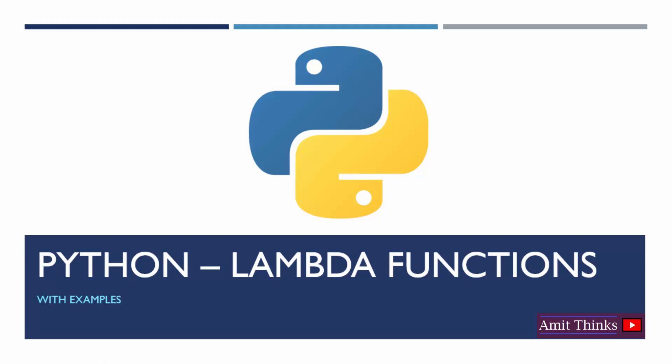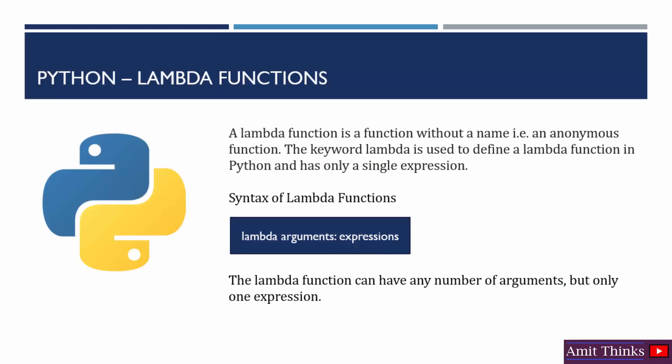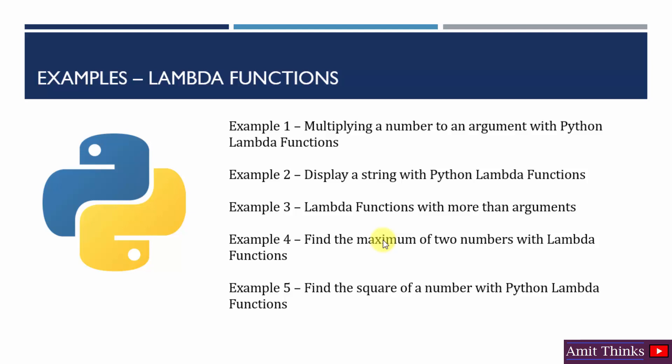In this video we will learn what are lambda functions in Python, with some live examples. Lambda functions are functions without a name — that is, an anonymous function. The keyword lambda is used to create a lambda function. The syntax is: lambda arguments colon expression. The lambda function can have any number of arguments, but remember, only a single expression.